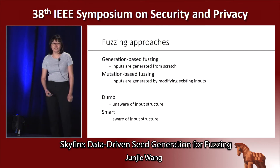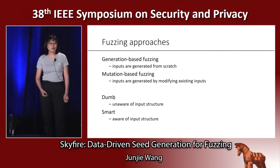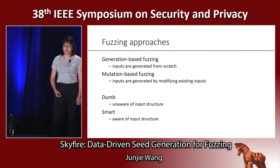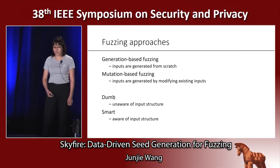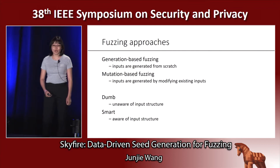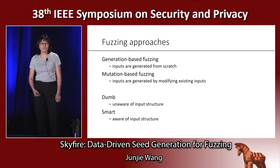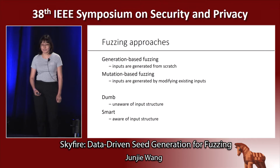Fuzzing can be generation-based or mutation-based, depending on whether inputs are generated from scratch or by modifying existing inputs. Fuzzing can also be dumb or smart, depending on whether it is aware of the input structure.